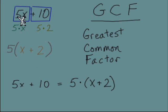And then what we'll put in the parentheses will be the terms that are left over. We have a positive x from the first term and a positive 2 from the second term. So when it's factored, 5x plus 10 equals 5 times this quantity x plus 2.